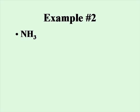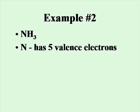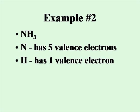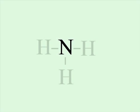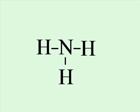Let's do the Lewis dot structure for ammonia. Nitrogen has five valence electrons, and hydrogen has one valence electron. Five plus three valence electrons from each hydrogen gives you eight total valence electrons. Place the central atom, nitrogen, and bond the three hydrogens around it. Each line represents a bonding pair of electrons, using six of your eight available electrons. Hydrogens are fine with their duet. Place the lone pair of electrons at the top to complete the octet for nitrogen, and you're done.